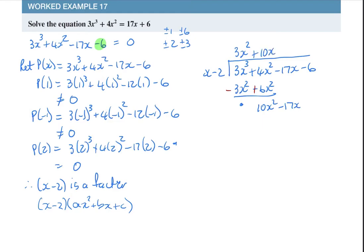x divided into 10x squared, positive 10x times, 10x times x is 10x squared, 10x times negative 2 is negative 20x. I subtract, that becomes a negative, that becomes a positive, I subtract, that is 0.